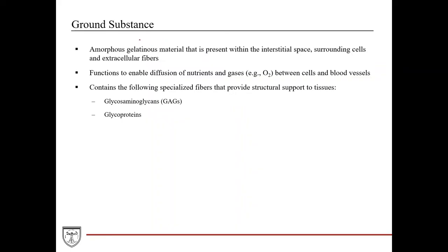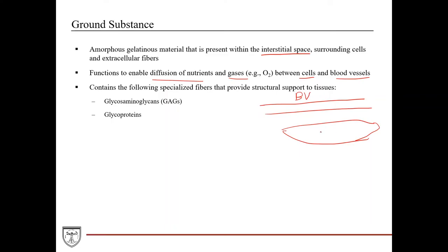Another component of connective tissue is the ground substance, which is basically an amorphous gelatinous material present within the interstitial space. It surrounds cells and extracellular fibers, acting as a gel medium where cells, support fibers, and structures exist to support the parenchyma. It enables diffusion of nutrients and gases between cells and blood vessels — for example, O2 diffuses through this gelatinous medium from a blood vessel to the parenchyma.